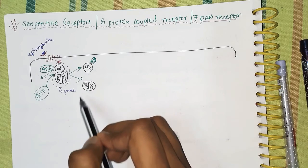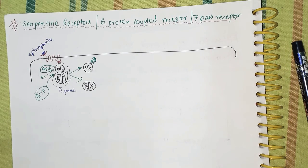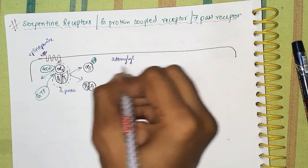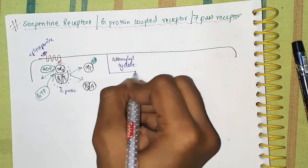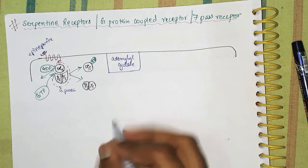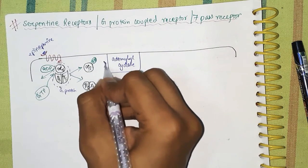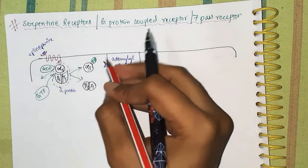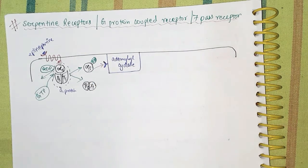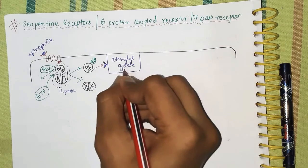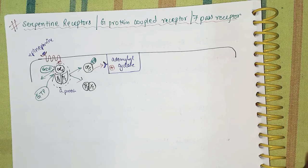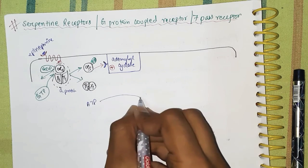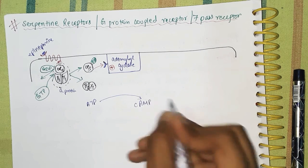We are talking about G stimulatory protein, so the alpha stimulatory subunit takes up GTP and separates from the beta and gamma stimulatory subunits. This activated alpha stimulatory part goes to a special membrane-bound protein known as adenylyl cyclase, binds to its receptor site, and activates it. Activated adenylyl cyclase then converts ATP into cyclic AMP.